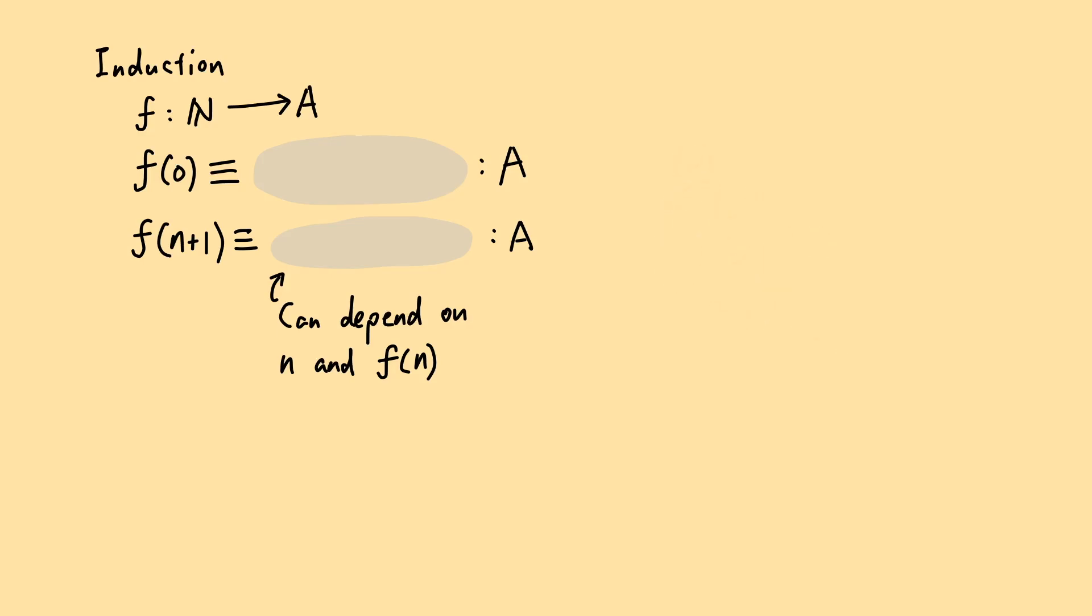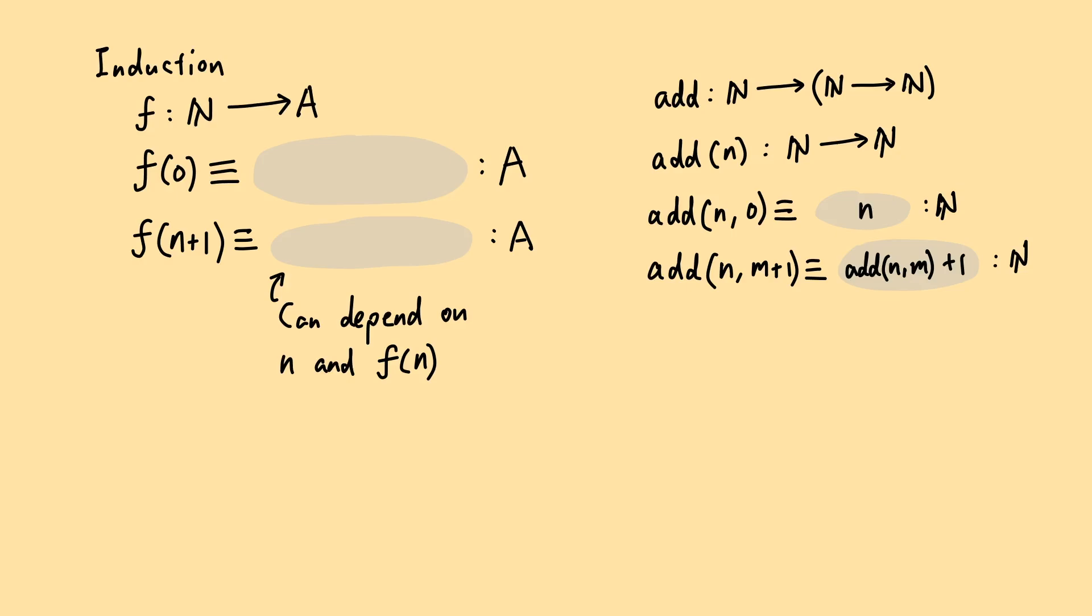To define addition operation using induction, we can say, for every natural number n, we are going to define the addition of n and 0 to be just n, and then for every m, the addition of n and m+1 to be the addition of n and m, and then plus 1. We will write n+m for the addition of n and m. It should not yield any confusion with the constructor +1, because the addition of n and 1 is definitionally the same as n+1.